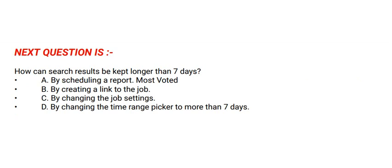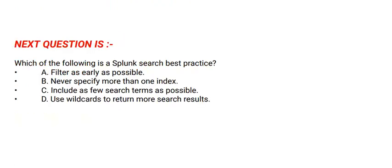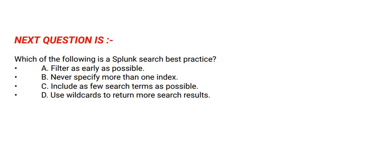The correct option is Option A. Next question is: which of the following is a Splunk search best practice? Options are: Option A: Filter as early as possible. Option B: Never specify more than one index. Option C: Include as few search terms as possible. Option D: Use wildcards to return more search results.